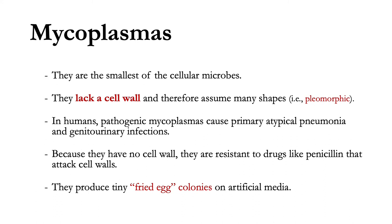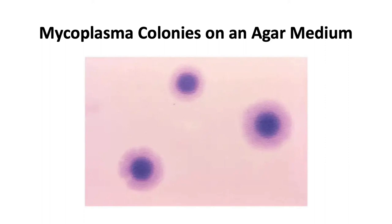Chlamydias are referred to as energy parasites — although they can produce ATP, they preferentially use ATP molecules produced by their host cells. Chlamydias are obligate intracellular pathogens transferred by inhalation of aerosols or by direct contact, not by arthropods. Medically important chlamydias include Chlamydia trachomatis, Chlamydophila pneumoniae, and Chlamydophila psittaci. Different serotypes of Chlamydia trachomatis cause different diseases, including trachoma (one of the leading causes of blindness in the world), inclusion conjunctivitis, and non-gonococcal urethritis. Mycoplasmas are the smallest of the cellular microbes. Because they lack cell walls, they exhibit many shapes from cocci to filamentous (pleomorphic). In humans, pathogenic mycoplasmas cause primary atypical pneumonia and genitourinary infections. Because they have no cell wall, they are resistant to penicillin and other antibiotics that work by inhibiting cell wall synthesis. Mycoplasmas can be cultured on artificial media where they produce tiny colonies called fried-egg colonies, resembling the sunny side of a fried egg.